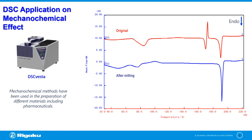Mechanochemical methods such as ball milling or pulverizing have been used in the synthesis and preparation of a broad range of molecules and materials, including pharmaceuticals. However, it may cause induced polymorphism which may affect the bioavailability of an active ingredient. Here is a DSC application comparing non-pulverized and pulverized pharmaceutical material. In the non-pulverized material, an endothermic peak near 60°C due to dehydration can be observed, and as the temperature increases, another endothermic peak due to melting, followed by an exothermic peak due to recrystallization continuously occurring at 160°C. Finally, an endothermic peak due to melting is observed at 180°C.